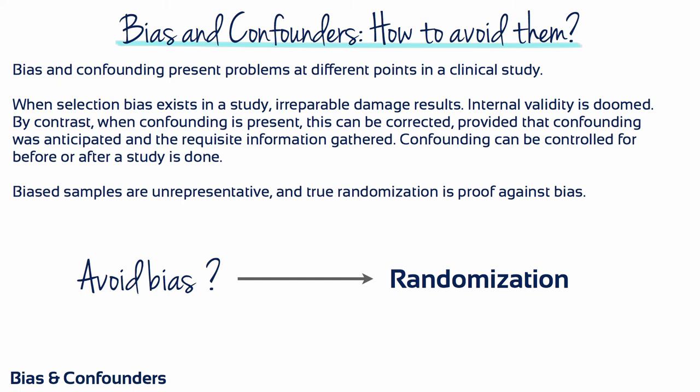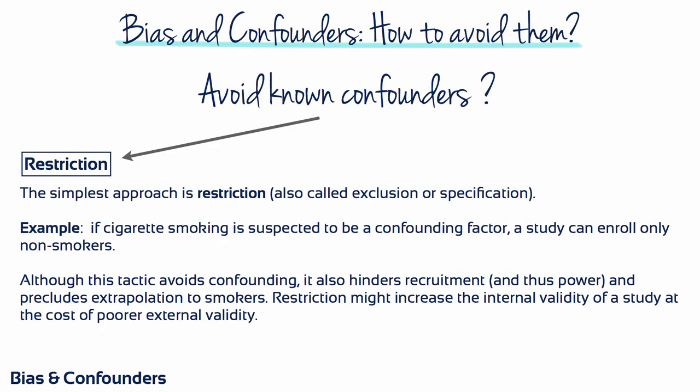Confounding can be controlled for before or after a study is done. But how do we deal with biased samples? Biased samples are unrepresentative; therefore, true randomisation is the best proof against bias. The simplest approach to controlling confounding is restriction, which is also called exclusion or specification. For example, if cigarette smoking is suspected to be a confounding factor, a study can enrol only non-smokers. Although this tactic avoids confounding, it also hinders recruitment and thus power, and precludes extrapolation to smokers. Restriction might increase the internal validity of a study at the cost of poorer external validity.